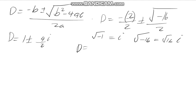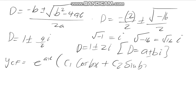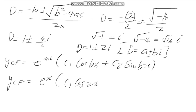So your D will be equal to 1 plus or minus 2i. Remember this tells you that D equals a plus or minus Bi, so you go to the equation where Y_CF equals e^(ax) times C1 cos(Bx) plus C2 sin(Bx). Therefore Y_CF equals e^x times C1 cos(2x) plus C2 sin(2x).